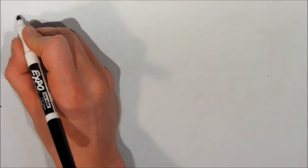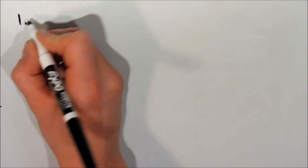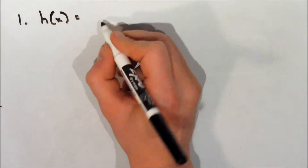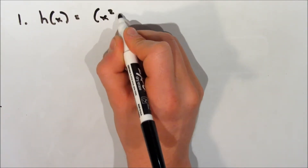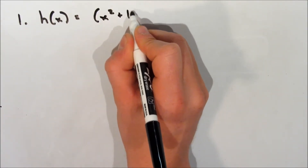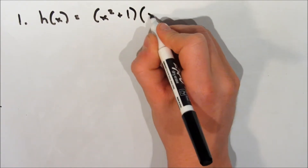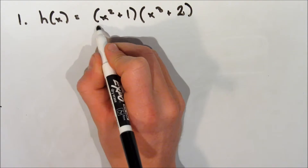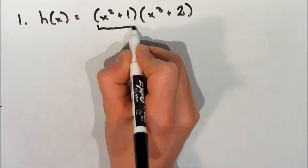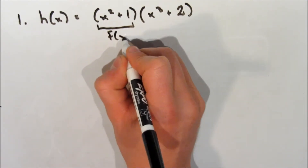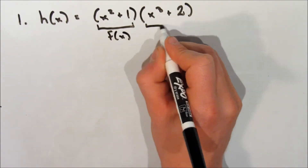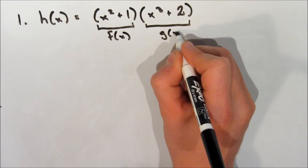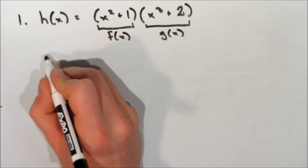Our first question: we're going to look at a function h of x equal to x squared plus 1, multiplied by x cubed plus 2. We can look at the x squared plus 1 part as our f of x from the formula, and we can look at the x cubed plus 2 part as our g of x.